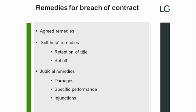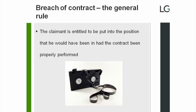Equitable remedies such as specific performance or injunction are discretionary and will not be available if monetary damages would provide an adequate remedy. The general rule is that where a contract has been breached and the claimant has suffered loss, the claimant is entitled to be put into the position they would have been in had the contract been properly performed. What we are talking about is net loss to the claimant, after benefits arising from the breach have been taken into account.